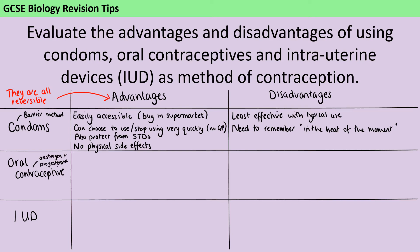Next up is the oral contraceptive — so that's either the pill, which contains oestrogen and progesterone, or the mini pill which just contains progesterone. You would use the mini pill if you have a particularly bad reaction to oestrogen — for instance, if there is a history of blood clots in the family, then the doctor will prescribe you the progesterone-only pill instead. One big advantage of the pill is that it's twice as effective as a condom in typical use.